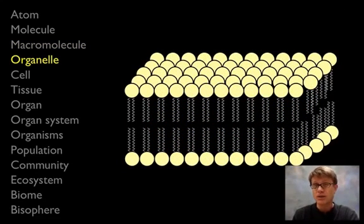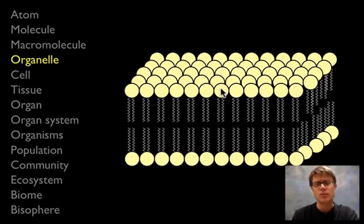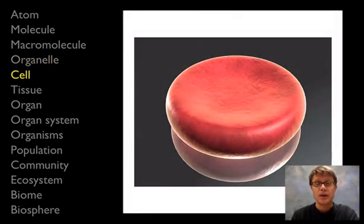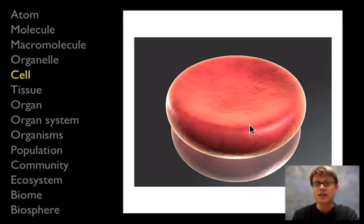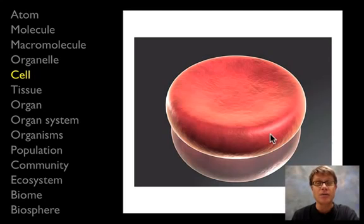Next, we get to the level of the organelle — the tiny organs inside cells. This right here is the plasma membrane. It's made up of macromolecules, including a phosphate group on top, and its emergent property is the ability to separate the outside from the inside of a cell. Speaking of cells, this is a red blood cell. It contains that plasma membrane and also the hemoglobin protein, giving it the emergent property of being able to move around and grab oxygen and deliver it to different parts of the body.